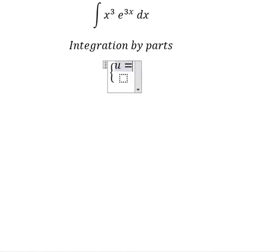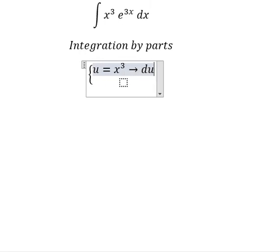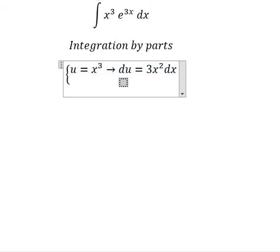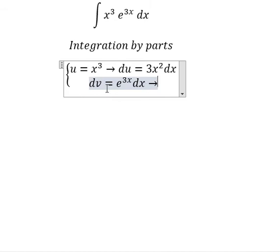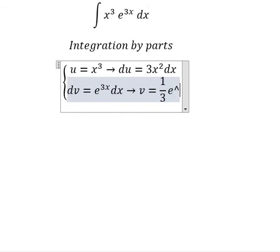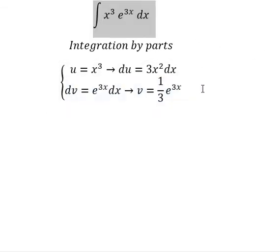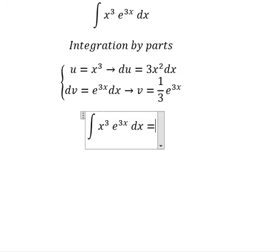We have u equals s to the power of 3. We take the first derivative of both sides, so we have du equals 3s² ds. We have dv equals e to the power of 3s ds, so v equals 1 over 3 e to the power of 3s.